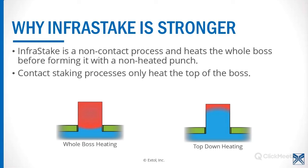Infrastake is a little stronger than Nanostake because it is non-contact — it heats the entire boss before it actually touches it with a non-heated punch. The module stays in position without touching the boss until all of the plastic throughout the boss is semi-molten. Only at that point do we touch it with tooling and form it into its finished shape. Therefore, we're using all of the material given in the boss. With Nanostake, it's conductive, so we can only put heat into the boss where we touch it — affecting only the outer edges of the boss. As the module advances, material inside the boss may not be semi-molten and would not be used in the stake, so we're not necessarily getting 100% engagement of the plastic.